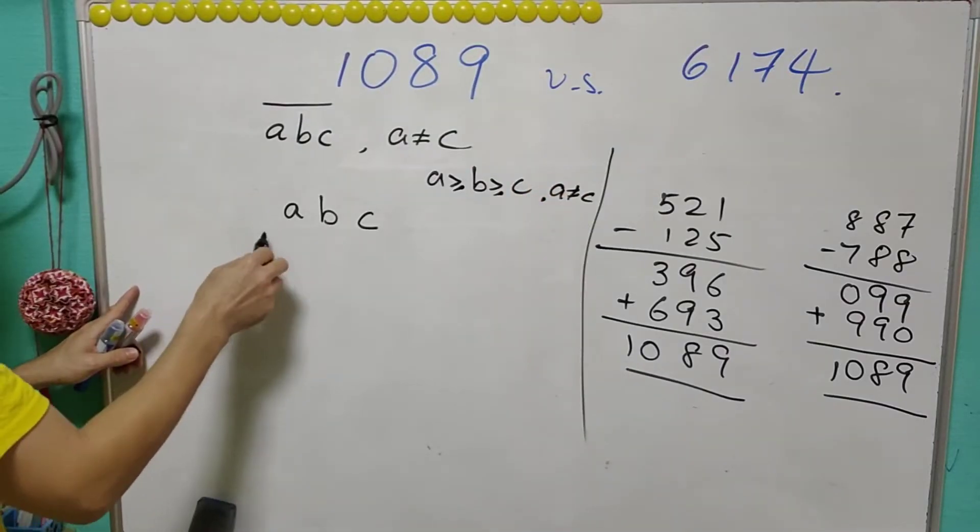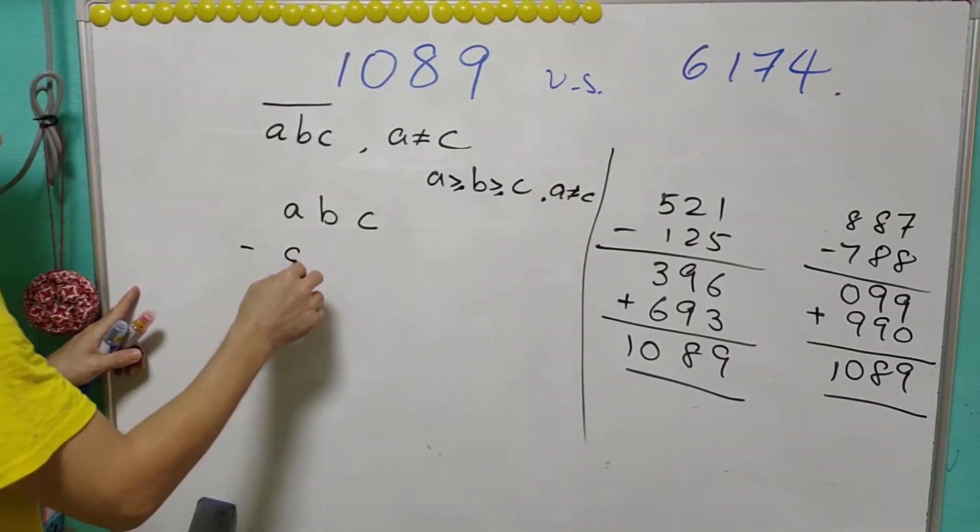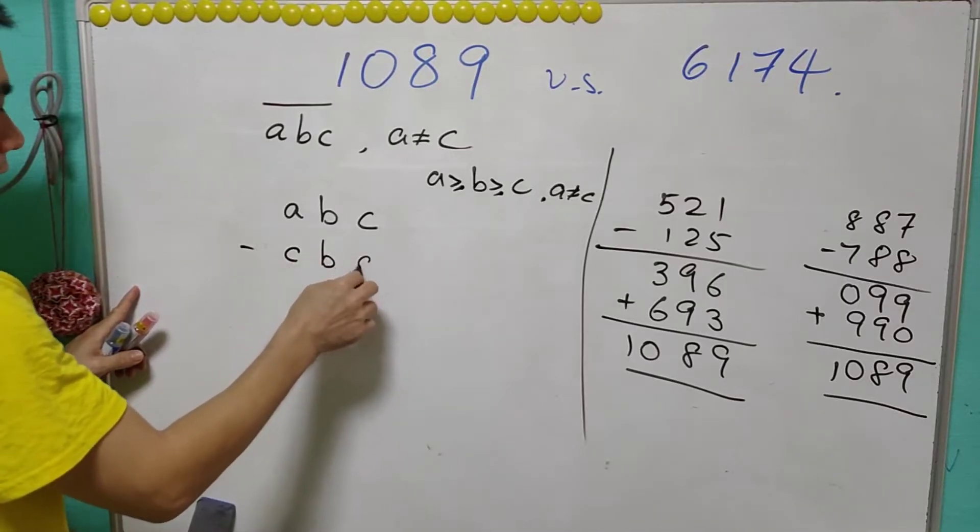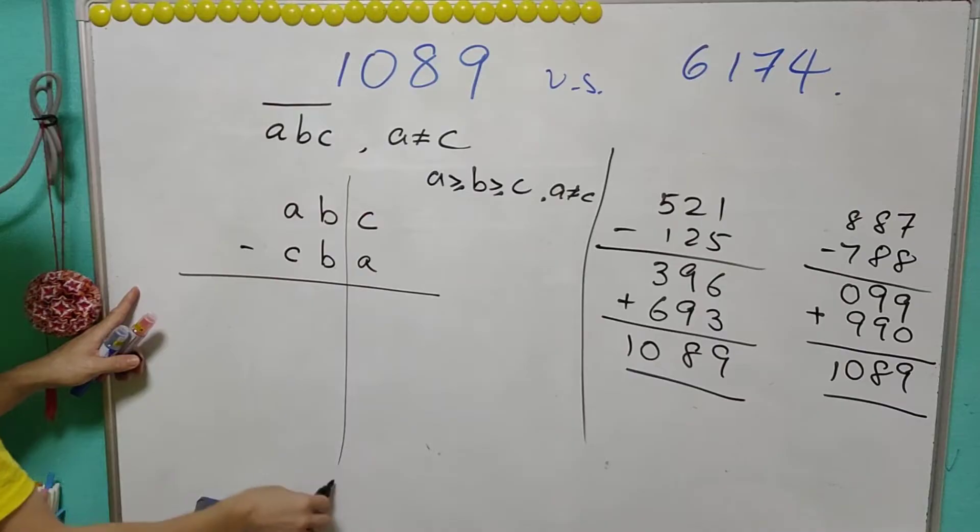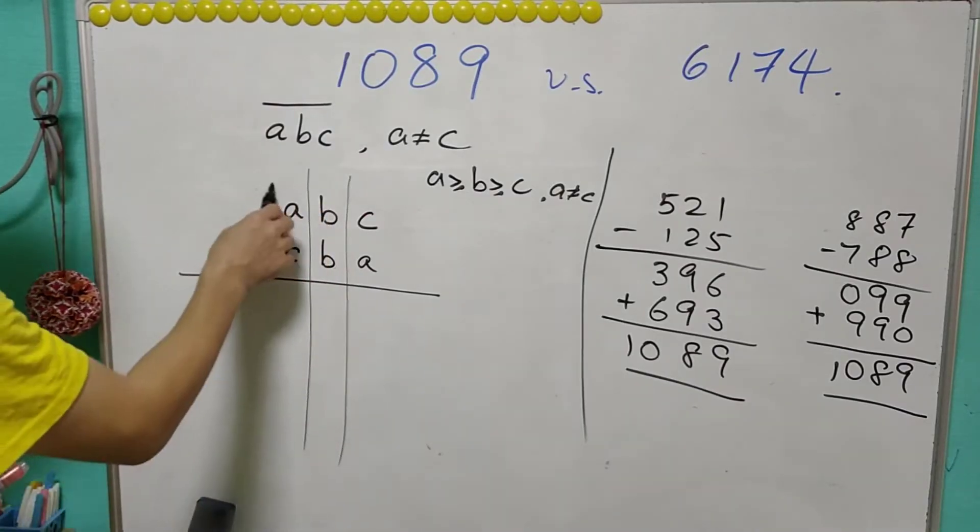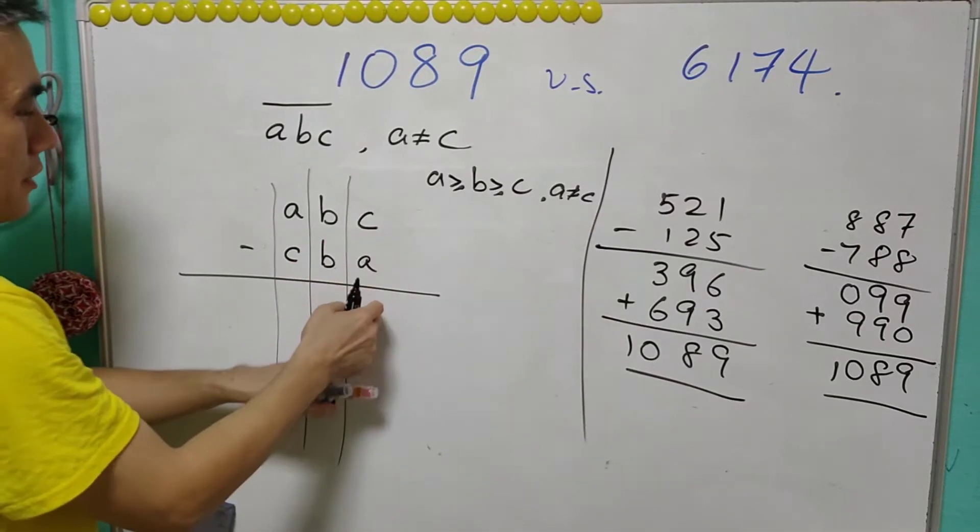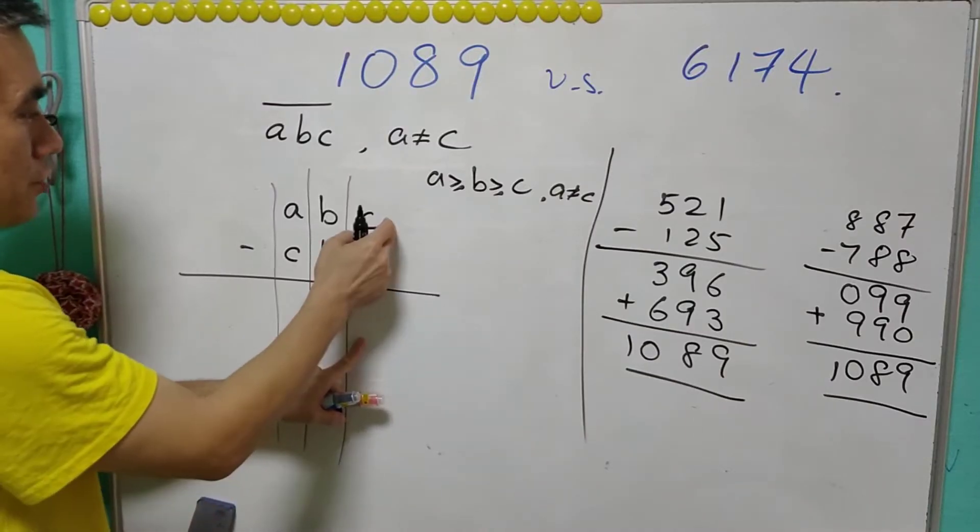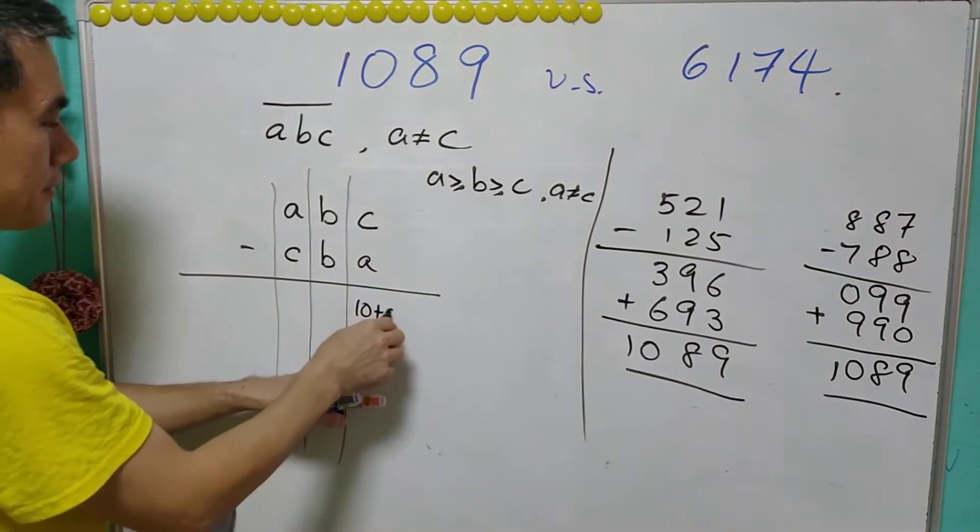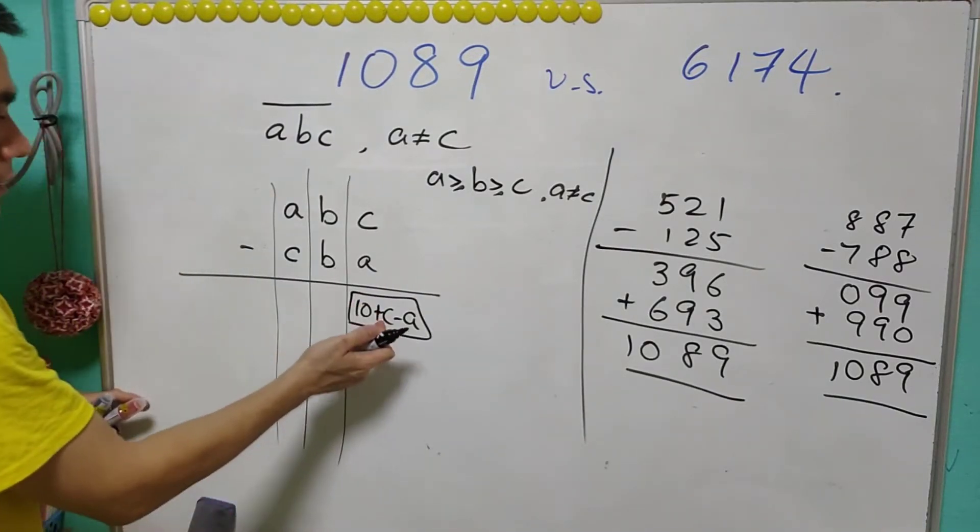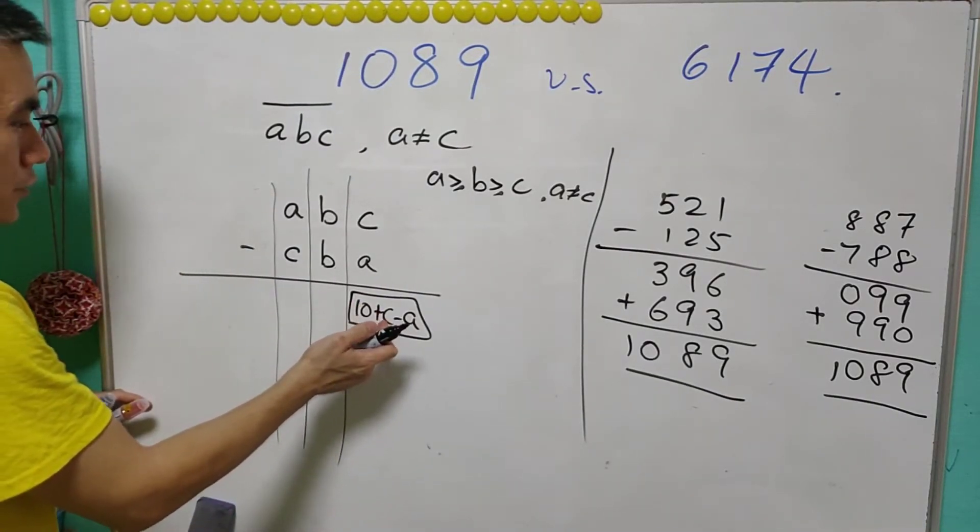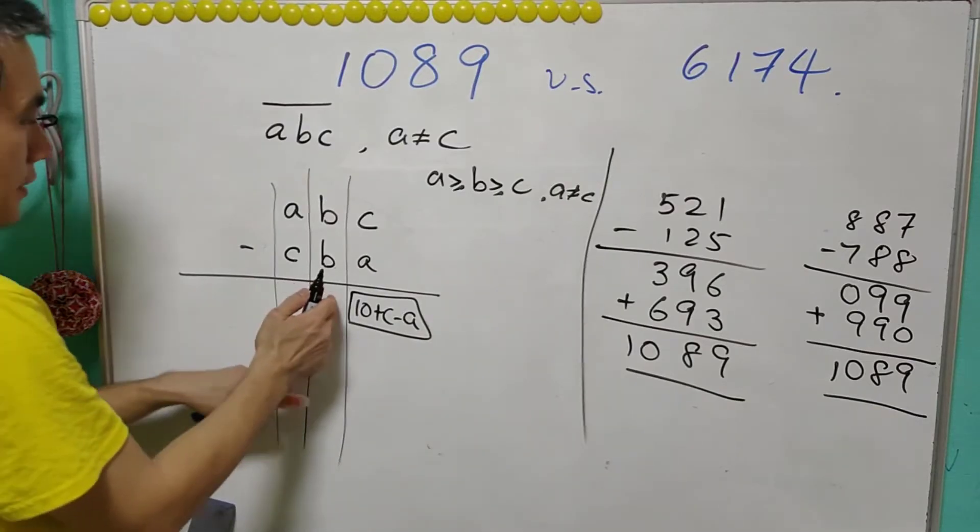So we minus the three digit number CBA - this should be the smallest. It turns out that this will be another three digit number. The last digit of this three digit number should be 10 plus C minus A, which is a number ranging from 1 to 9.